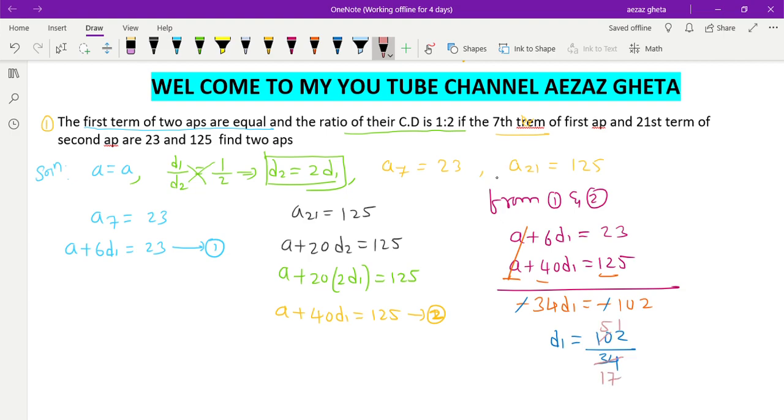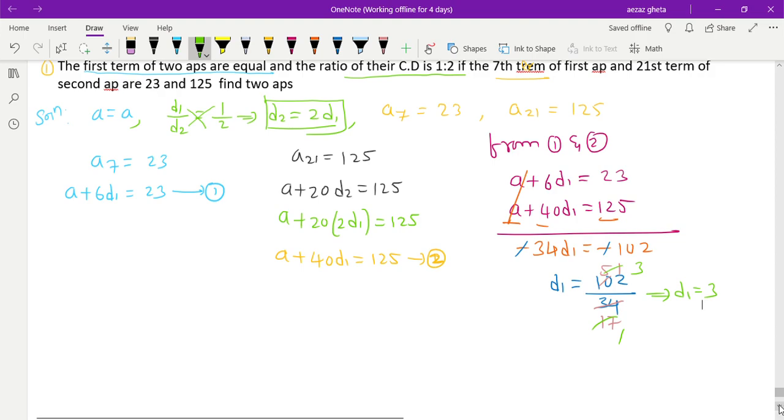So d1 equals 3. What will be d2? Can you guess? d2 equals twice d1, right? So d2 = 2 × 3, which gives d2 = 6. And we need to find